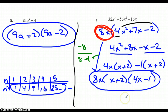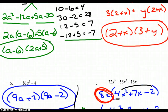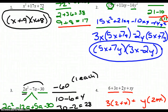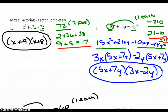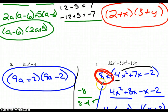In summary: factor out a GCF when you can divide everything by a common number. For trinomials, if there's no coefficient on x², just find two factors and substitute directly. If there is a coefficient, use the grouping method. If there are four terms, use grouping directly. If there are two terms, it's either a GCF or a difference of squares.